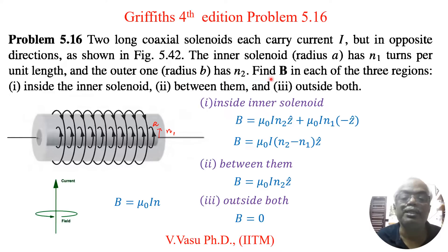Then the other one, that is the outer one, is radius b has N2 turns. So this outer one is having a radius b and the number of turns per unit length is N2.